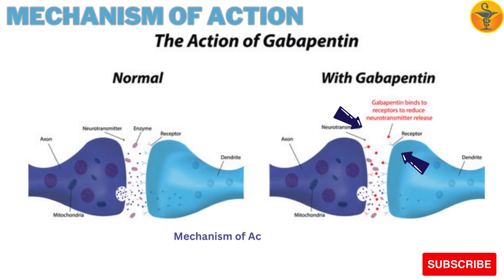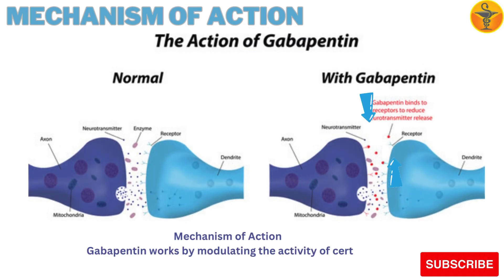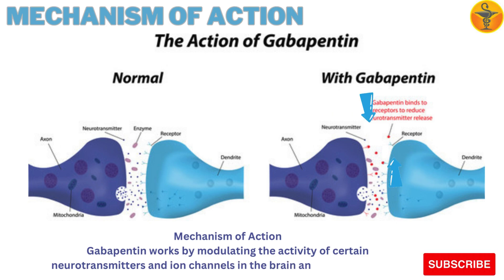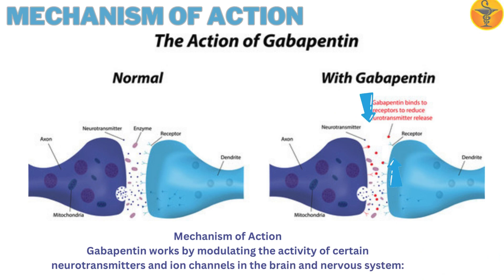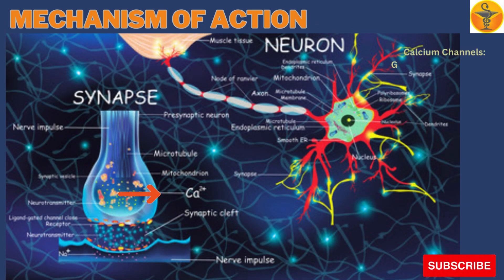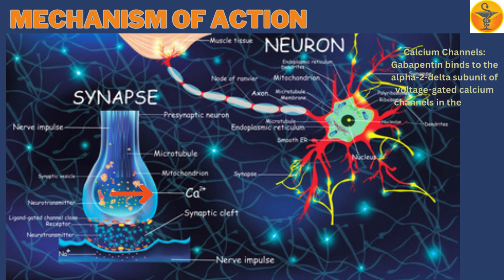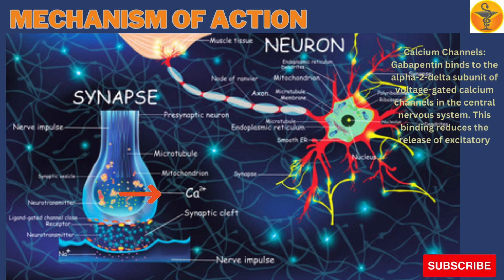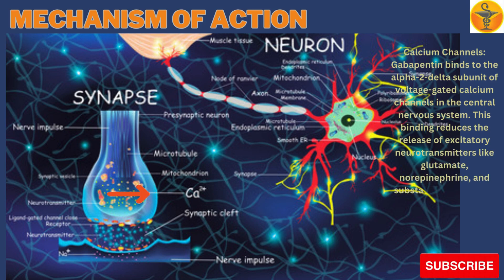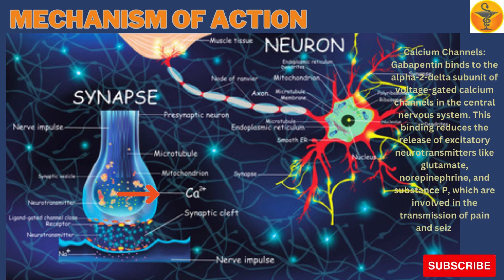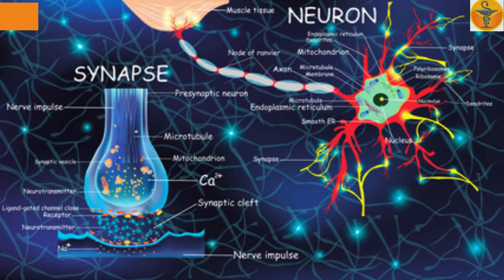Mechanism of Action. Gabapentin works by modulating the activity of certain neurotransmitters and ion channels in the brain and nervous system. Calcium Channels: Gabapentin binds to the alpha-2 delta subunit of voltage-gated calcium channels in the central nervous system. This binding reduces the release of excitatory neurotransmitters like glutamate, norepinephrine, and substance P, which are involved in the transmission of pain and seizures.